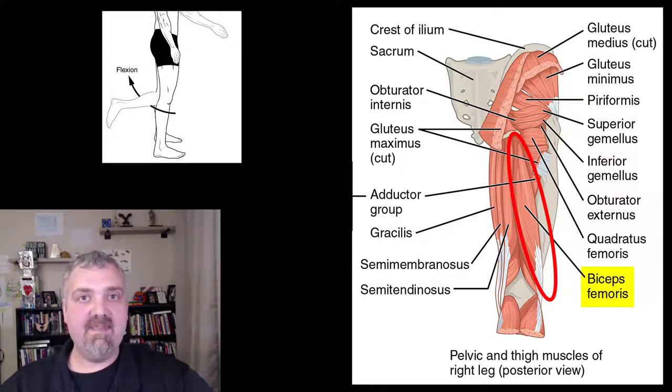So the biceps femoris is called that because it's in the femoral region and has two heads. It is involved in flexion of the knee, which you can see on the screen.